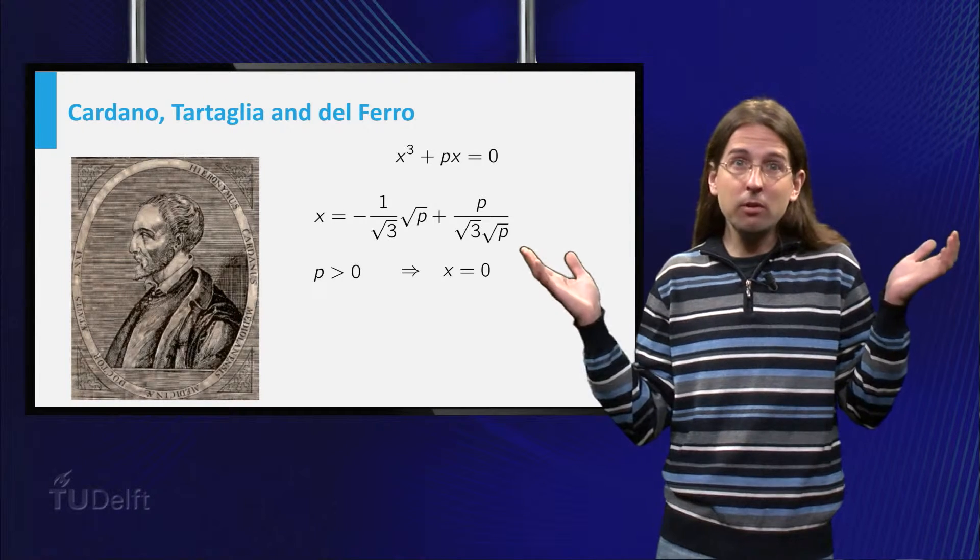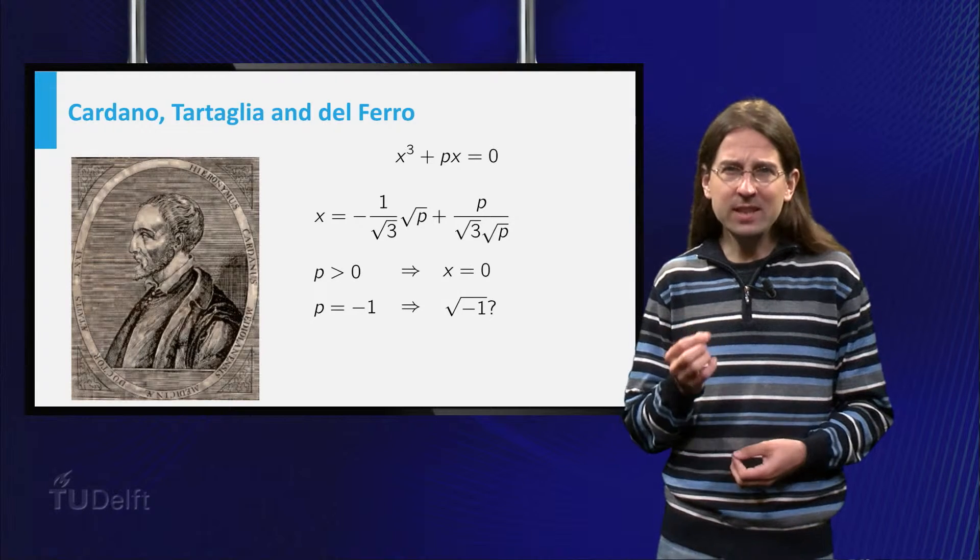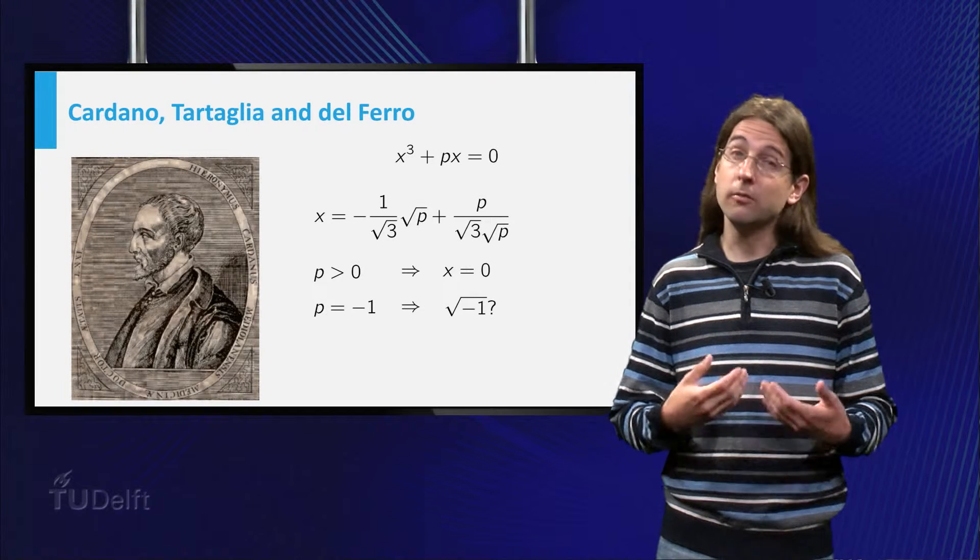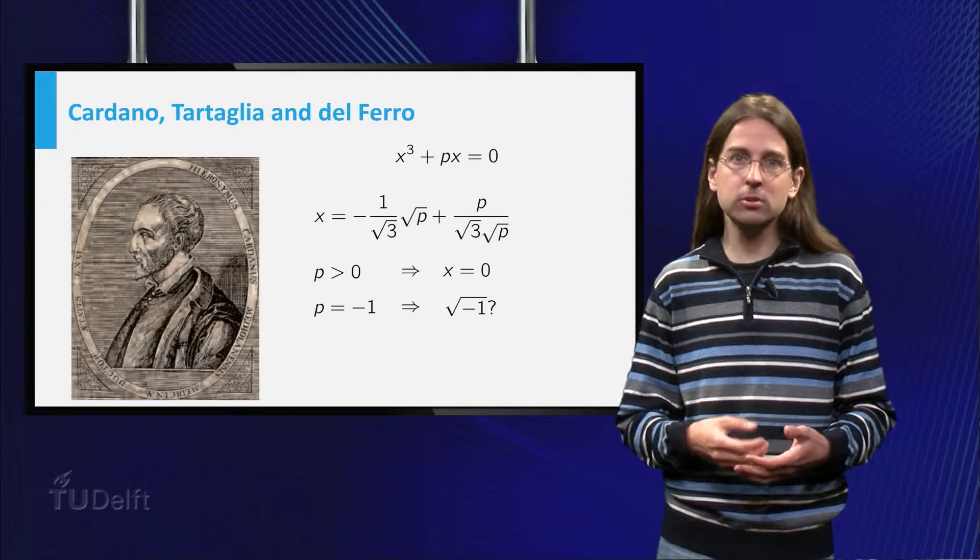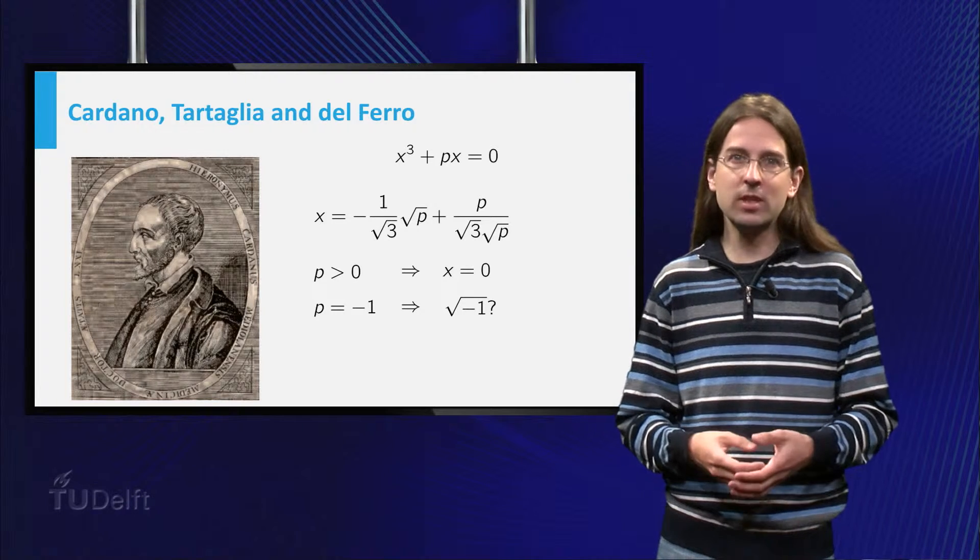But what happens to our formula if p equals minus one? We have to take the square root of a negative number. Fortunately, if we are willing to calculate with square roots of negative numbers, the solution x equals zero pops out as before.